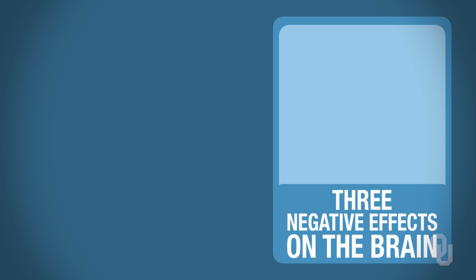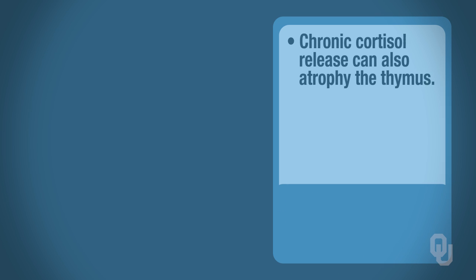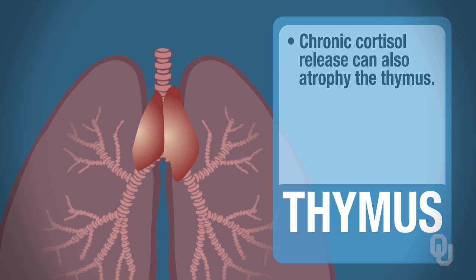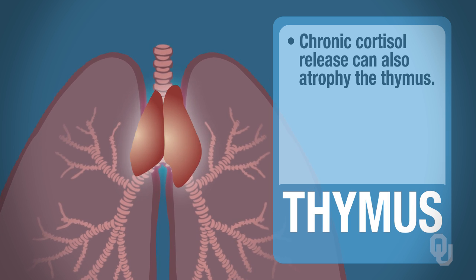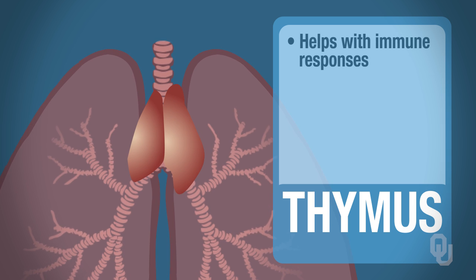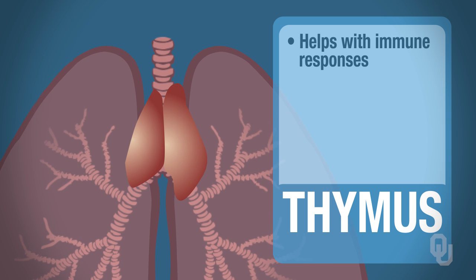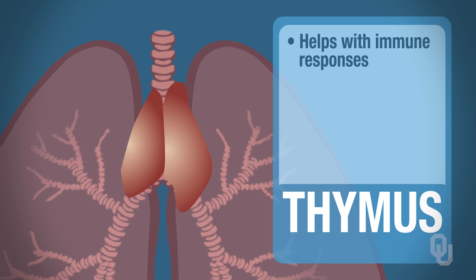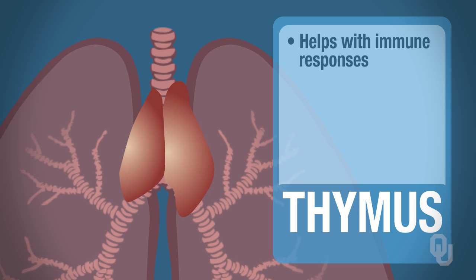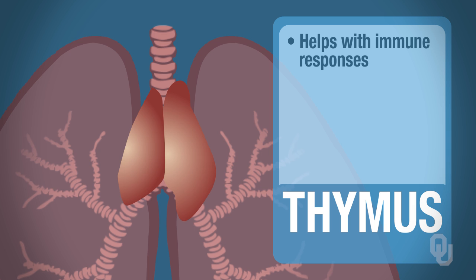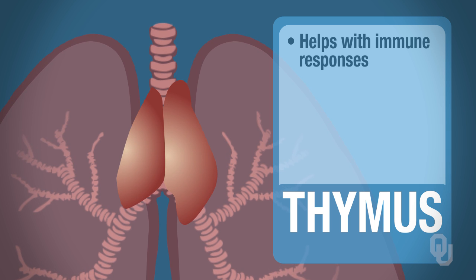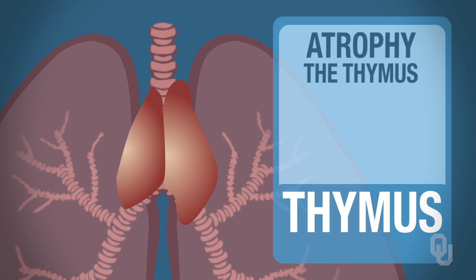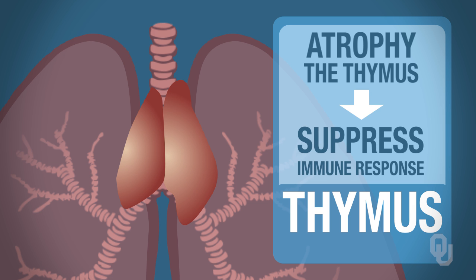Chronic cortisol release can also atrophy the thymus. The thymus is very important because it helps with immune responses. If cells of the thymus are being destroyed, the thymus can no longer function in terms of the immune system—atrophying the thymus suppresses the immune response.